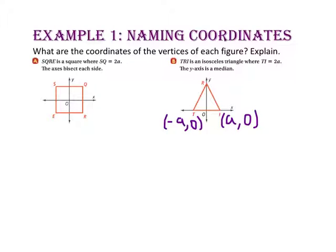For point R, since we do not know the height of our triangle, we are going to use another variable B for the length from point O or the distance from point O to point R along the y-axis. So our y-coordinate will be B, but since we don't move left or right along the x-axis, our x-coordinate will be 0. So point R will be ordered pair (0, B).